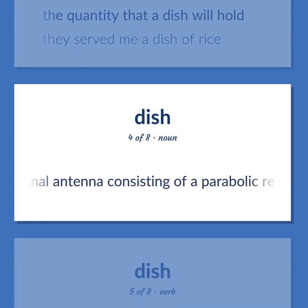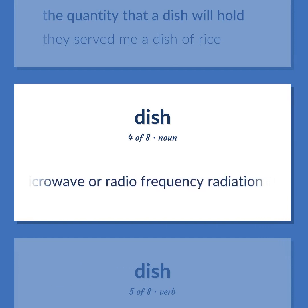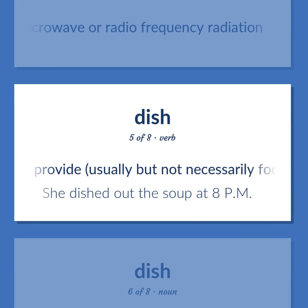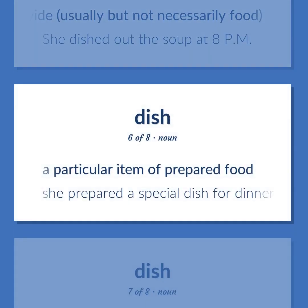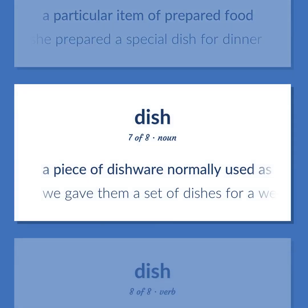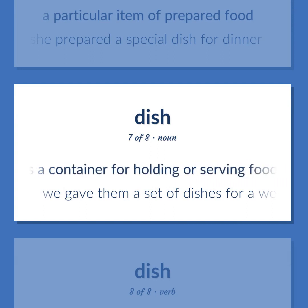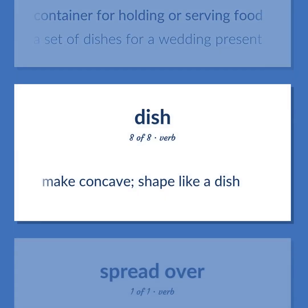Directional antenna consisting of a parabolic reflector for microwave or radio frequency radiation. Provide, usually but not necessarily, food. She dished out the soup at 8pm. A particular item of prepared food. She prepared a special dish for dinner. A piece of dishware normally used as a container for holding or serving food. We gave them a set of dishes for a wedding present. Make concave; shape like a dish.